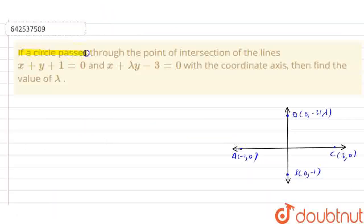The question is, if a circle passes through the point of intersection of the lines x plus y plus 1 equals 0 and x plus lambda y minus 3 equals 0 with the coordinate axis, then find the value of lambda.